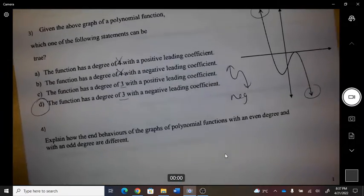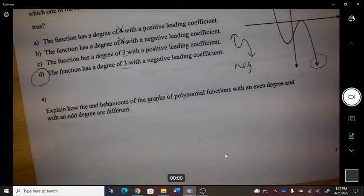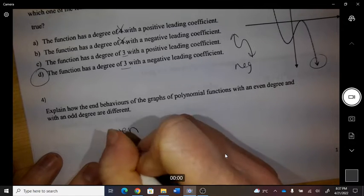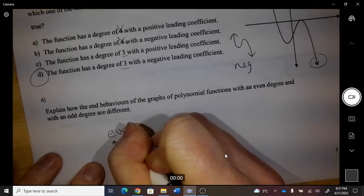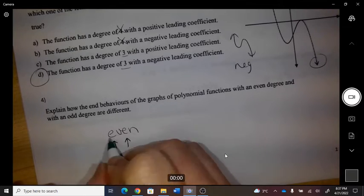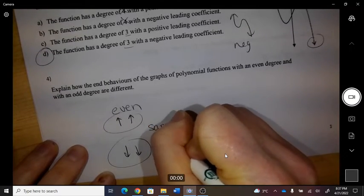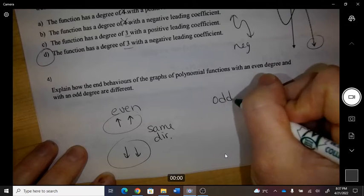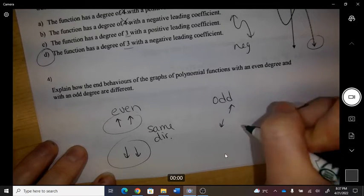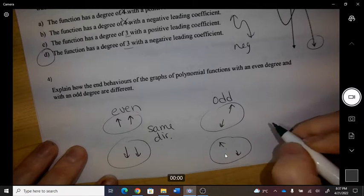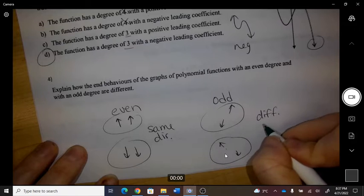Number four: explain how the end behavior of a graph is different with an even and an odd degree. So even degree - the ends go either like that or like that, which is the same direction. And when it's odd degree, they're going to be going in different directions.